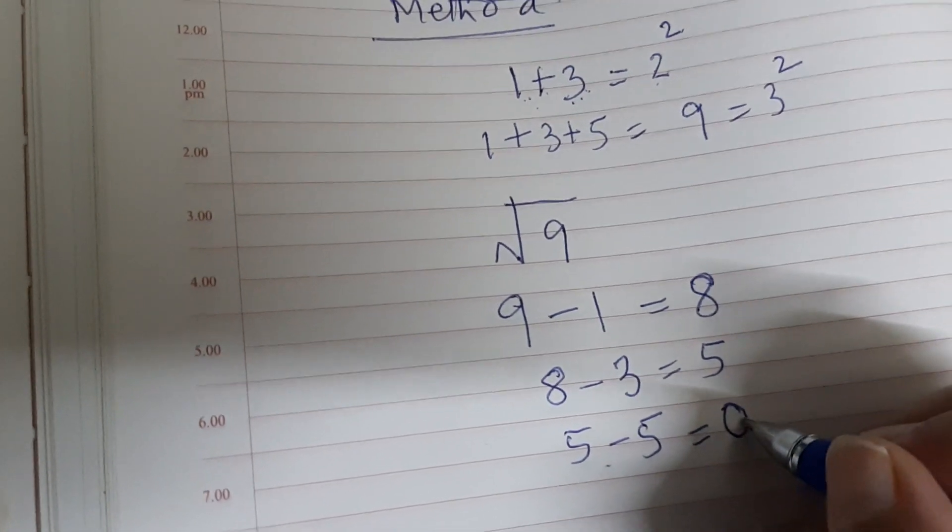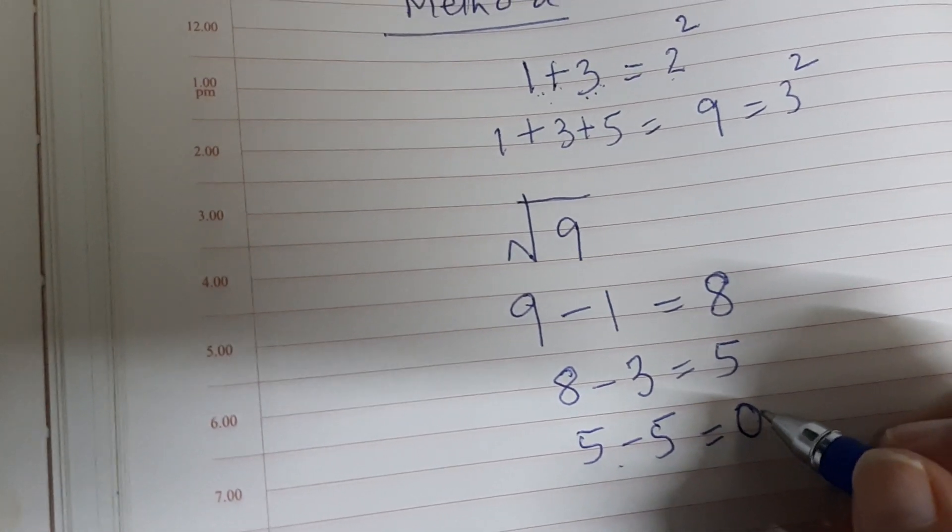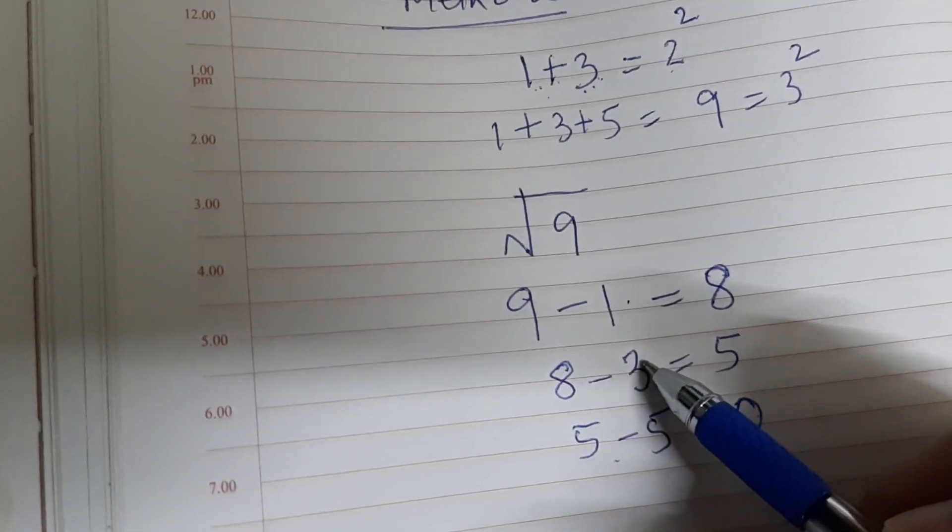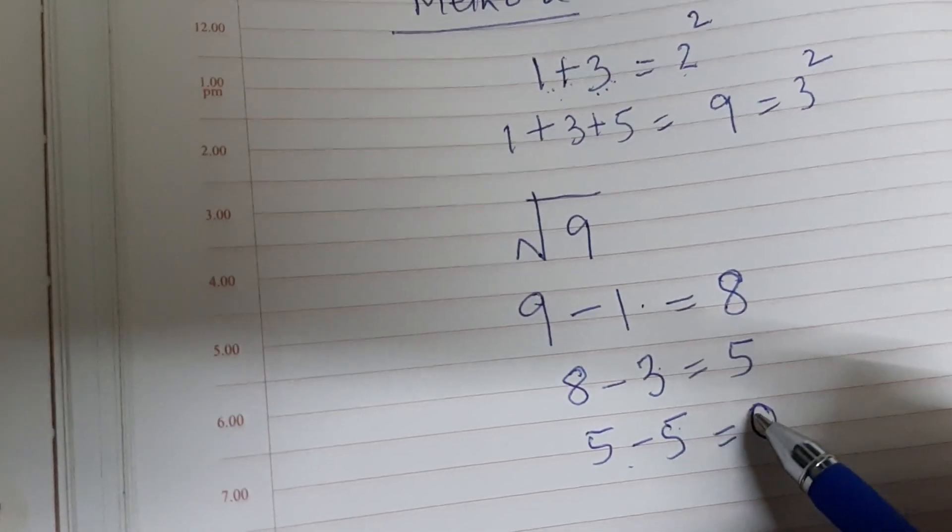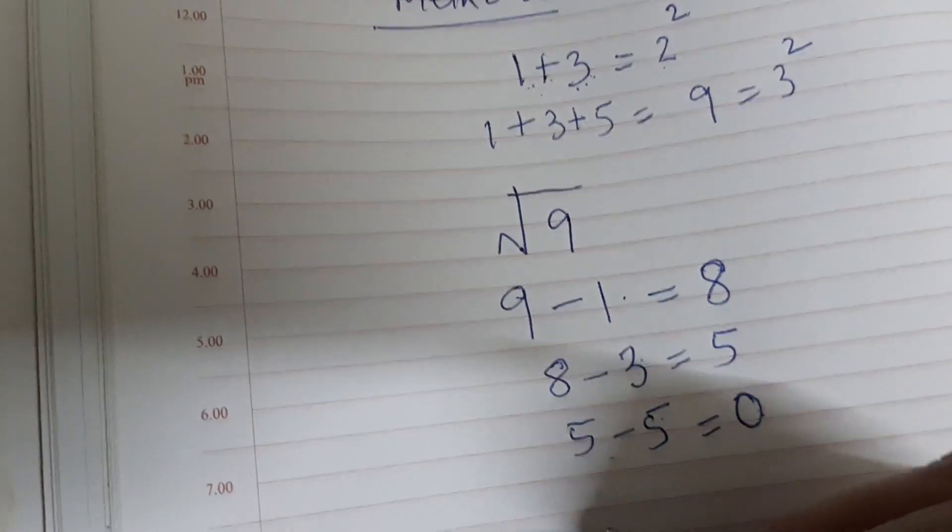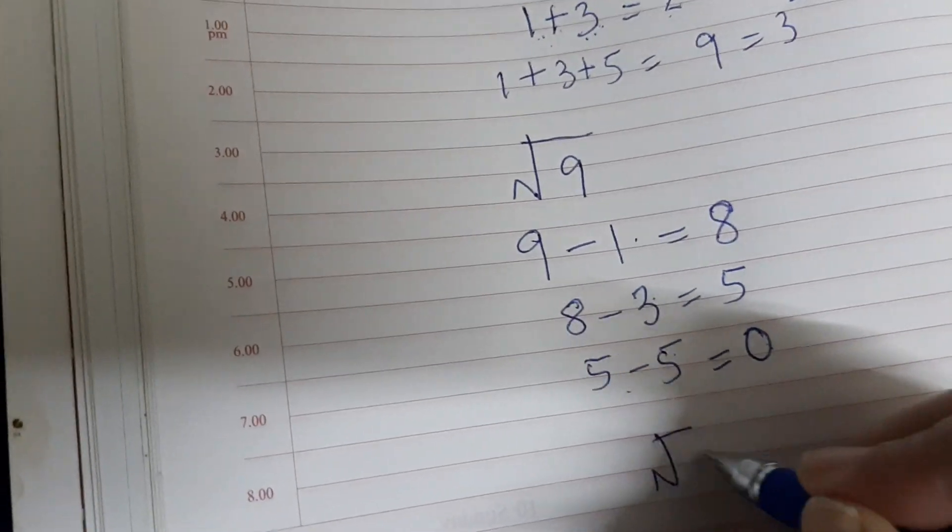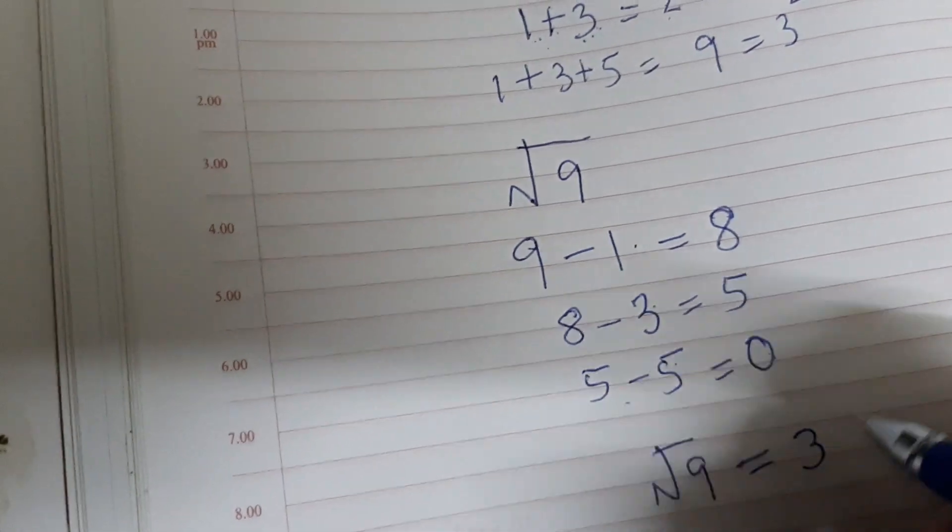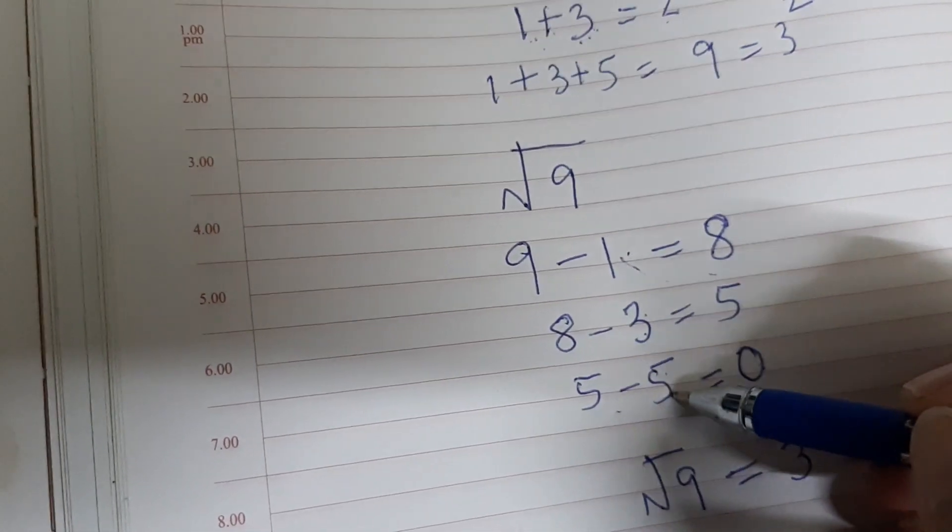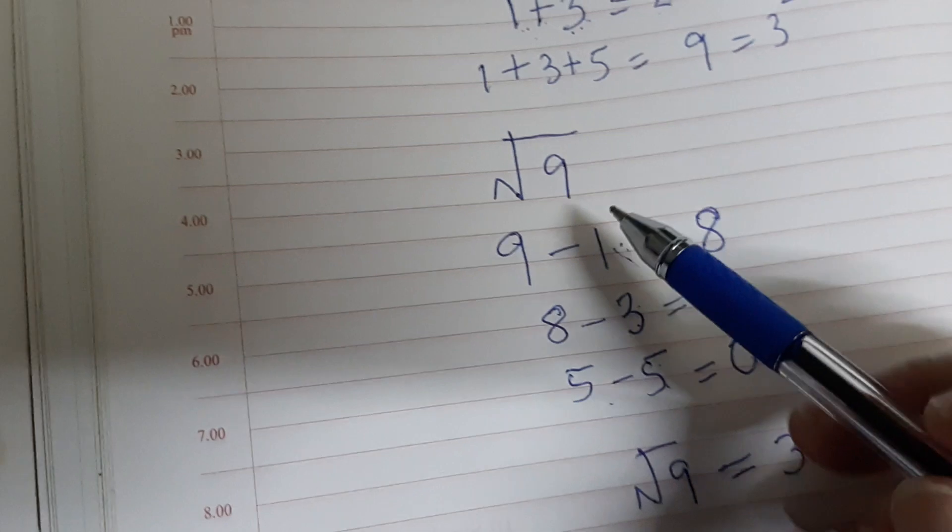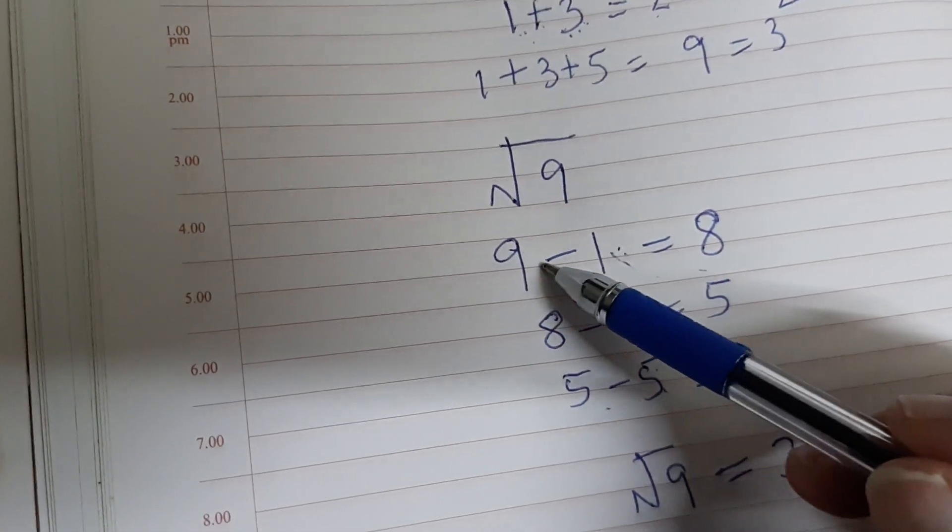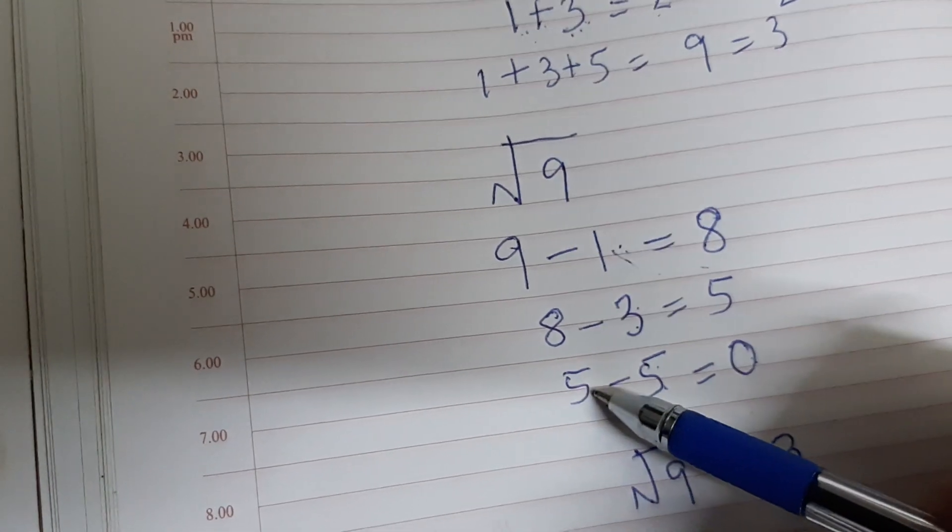This means square root of 9 is equal to 3, because 3 odd numbers have been subtracted from the given numbers: 9, then 8, and then 5.